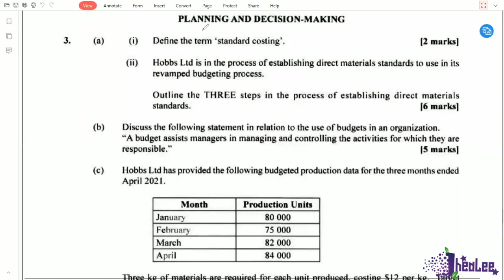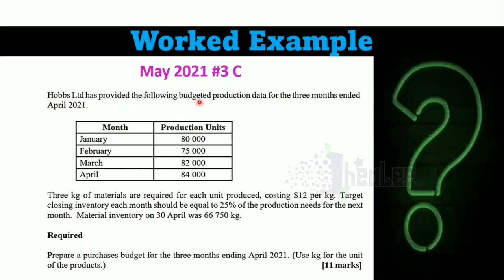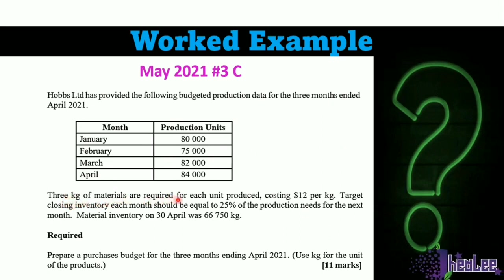Still looking at OBS Limited. The question presents the 2021 production units for four months. Three kg of materials are required for each unit produced, costing $12 per kg. The target closing inventory each month should be equal to 25% of production needs for the next month. Bear in mind that the closing inventory for a period becomes the opening inventory for the next period.